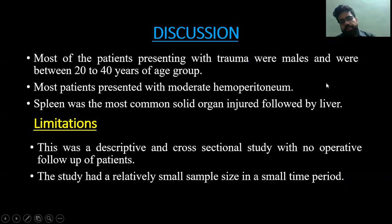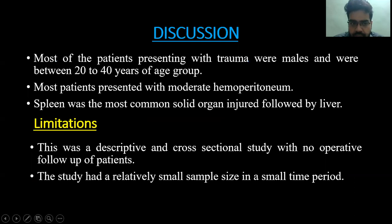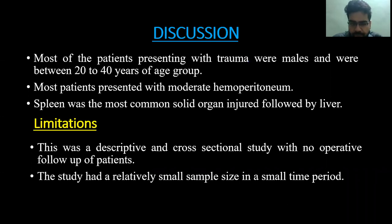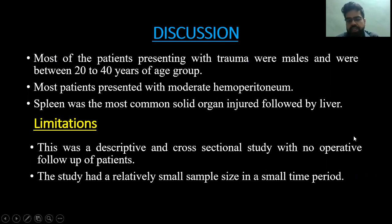In discussion: most patients presenting with trauma were male and between 20 to 40 years of age. Most patients presented with moderate hemoperitoneum. The spleen was the most common solid organ injury, followed by the liver. The limitation of the study was that it was a descriptive and cross-sectional study with no operative follow-up of patients. The study had a relatively small sample size over a short time period, with only 30 patients included.